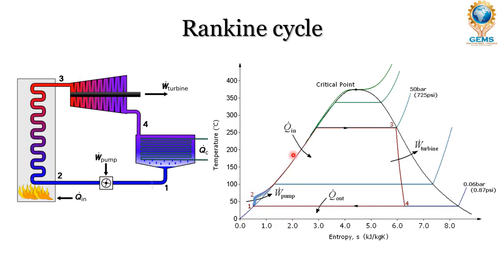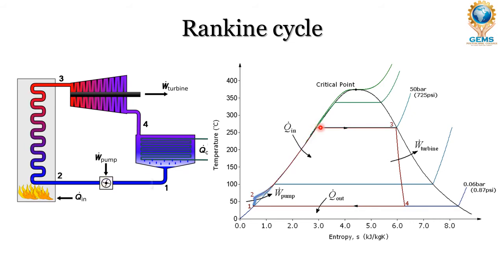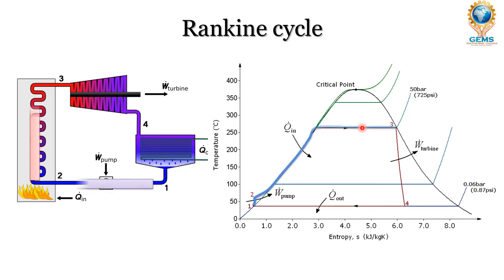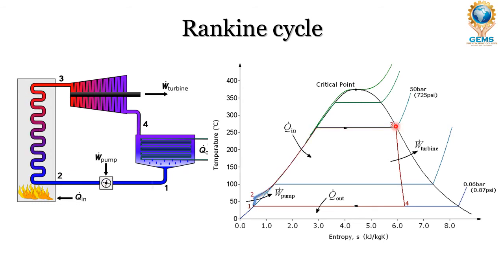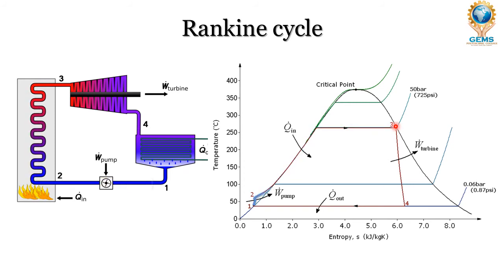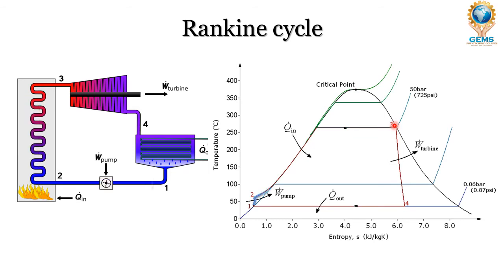From point 2, it slightly moves to the saturated liquid line, and after reaching boiling temperature it goes into the wet region. The vaporization starts and completely touches the dry saturated point. Point 3 represents the complete dry saturated steam.